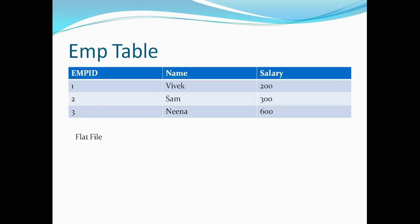So every organization has an employee table. I have kept my employee table pretty short and compact so that you can grab the concept easily. My employee table has three columns: ID, name, and salary. Vivek, Sam, and Nina are part of the organization and their respective salaries are highlighted in the rightmost column.